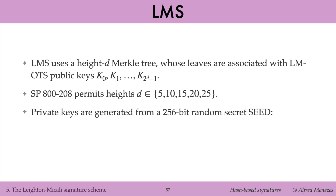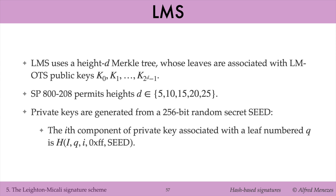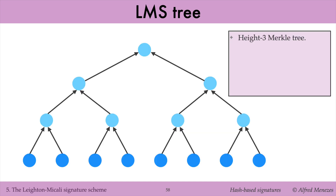All private keys are generated from a 256-bit random secret seed. Specifically, the i-th component of the private key associated with the leaf numbered Q is obtained by hashing the tree identifier I, the leaf identifier Q, the index i of the hash chain, the constant FF, and the secret seed. The nodes of a Merkle tree are numbered sequentially from left to right and top to bottom. The root is assigned number 1, the left child of a node i is assigned number 2i, and the right child of node i is assigned number 2i+1. Thus, the leaves of a height-D tree are numbered from 2^D to 2^{D+1} minus 1.